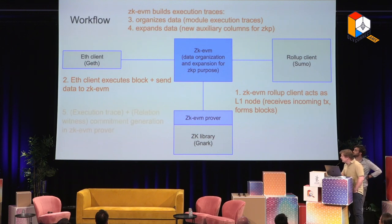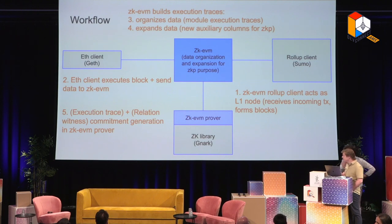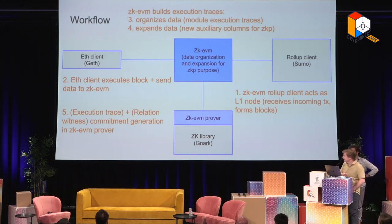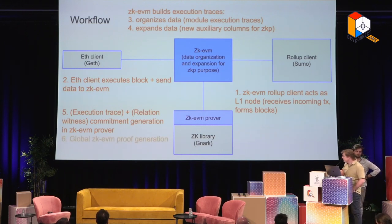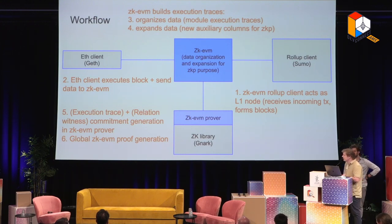Once all of this is done, the data gets sent to the prover. The prover computes more stuff, mainly the parts that are there to witness the satisfaction of the constraints — relationship witnesses. It generates commitments to all this data and then packages everything together into a ZK proof of the execution of the EVM.